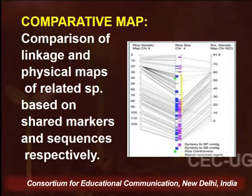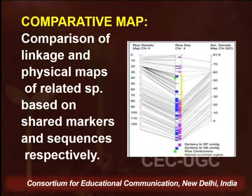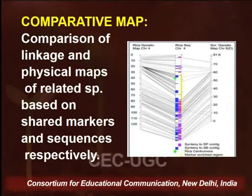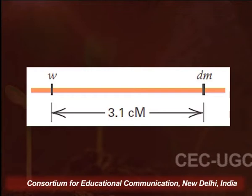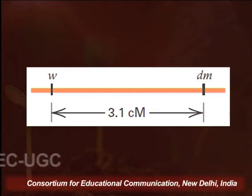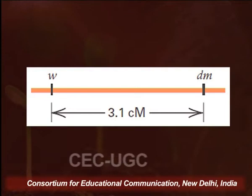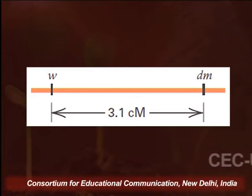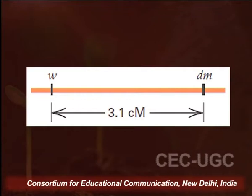On your screens you find, for example, chromosome number 4 of rice, with a physical map and a DNA sequencing map, and there seems to be a whole lot of synteny as far as the positioning and sequences of DNA are concerned. Going back to our previous example, the distance between two genes was approximately 3.1 centimorgans. That would mean a recombination percentage definitely less than 50 percent, meaning these genes are supposed to be linked.